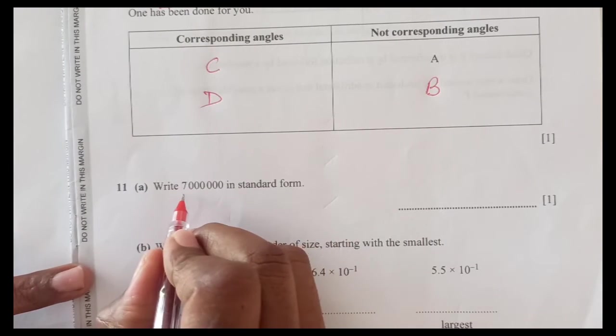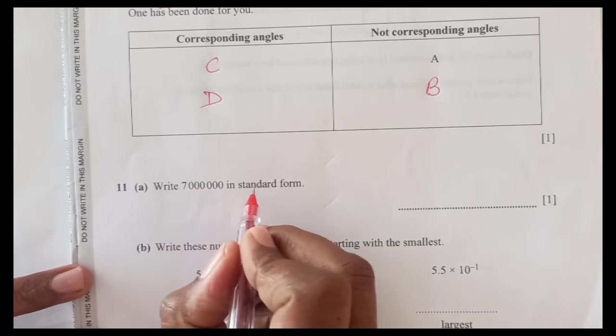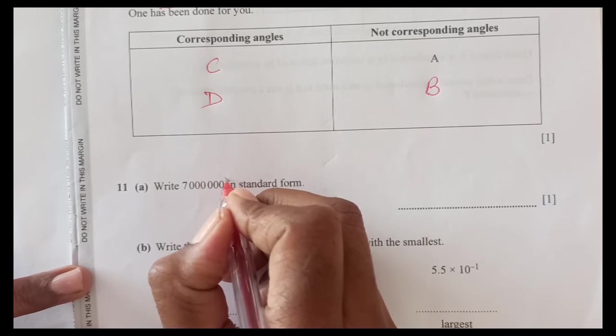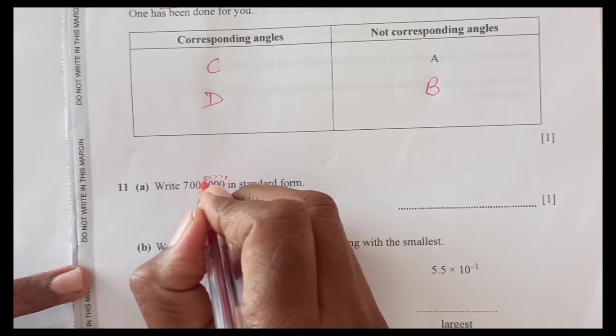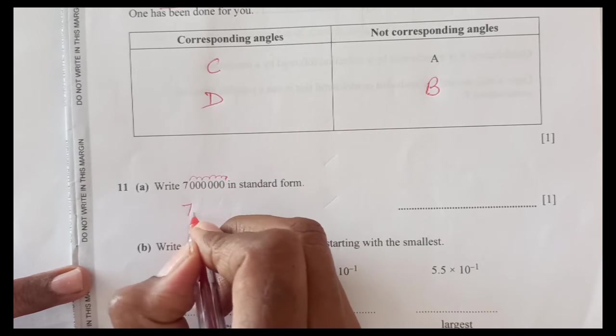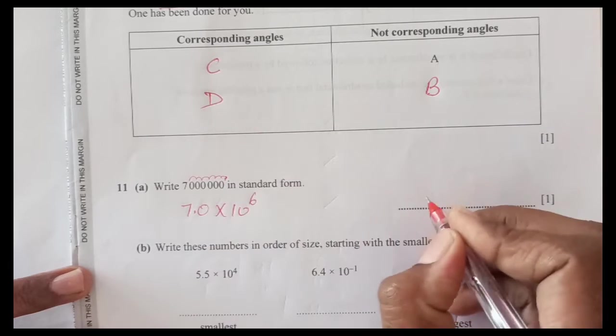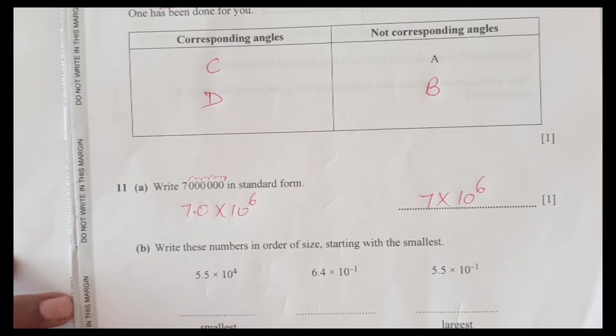Write 7.7 million in standard form. Decimal is here, so we are counting decimal up to 1, 2, 3, 4, 5, 6 up to here. 7.0 times 10 raised to power 6, 7 times 10 raised to power 6.